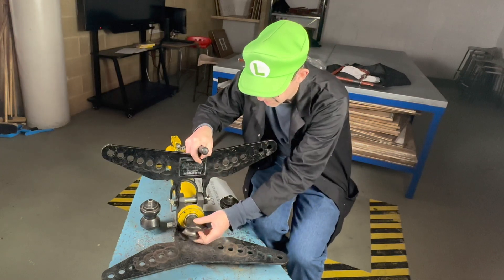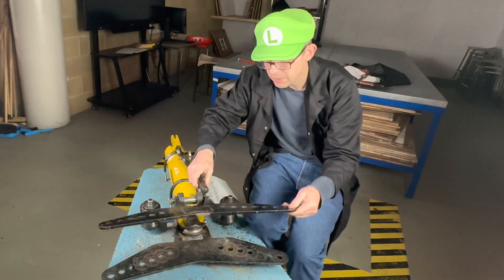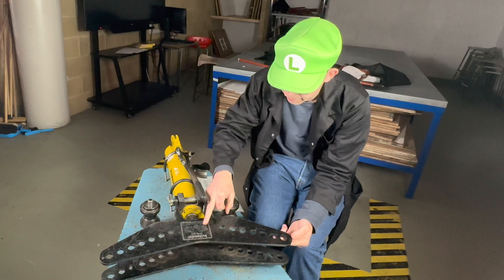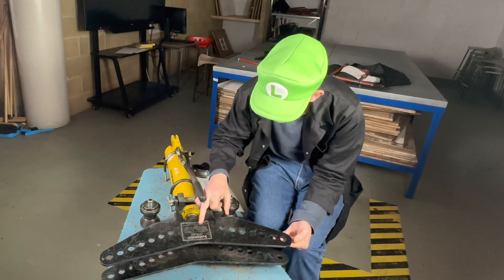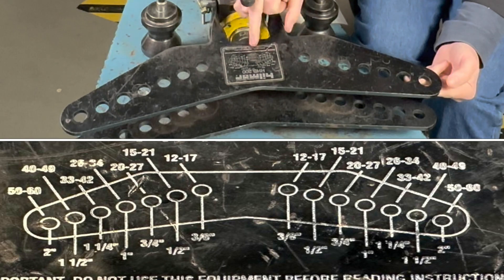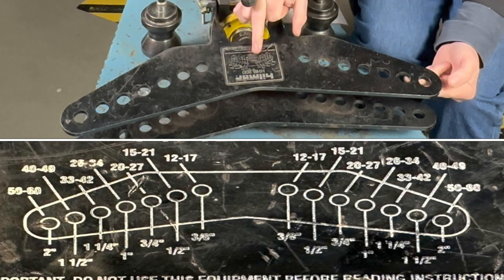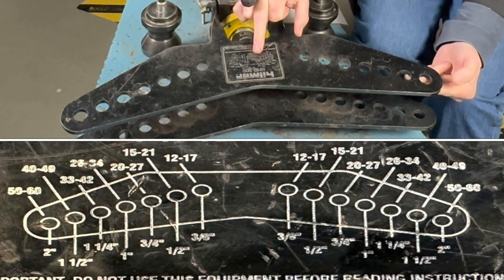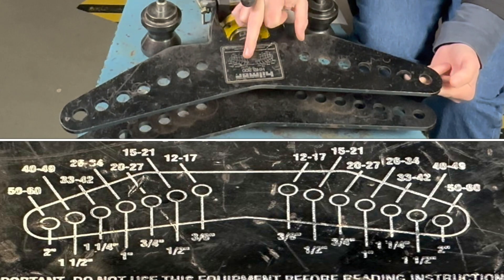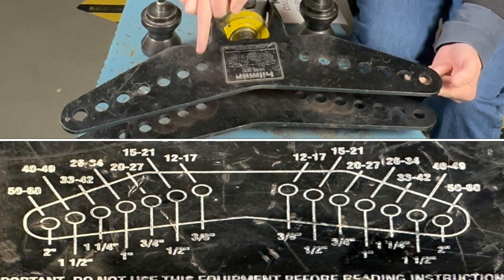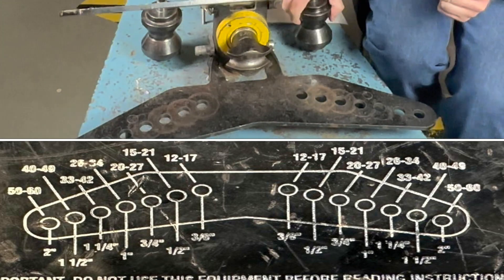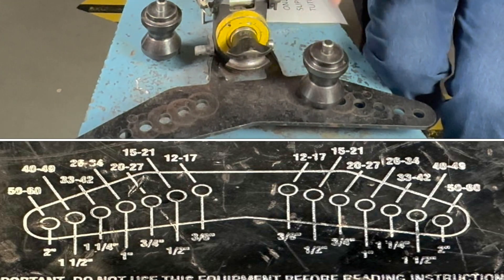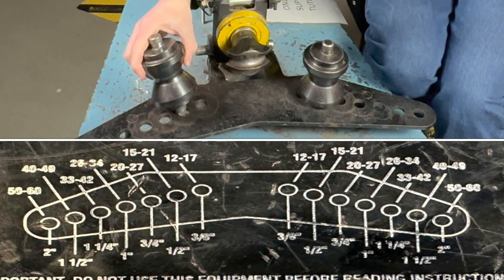There's lots of holes here. If you look in the chart, each hole corresponds to what size pipe you're going to bend. For example, the second hole here says half inch pipe, so we insert the pins into the holes like this.